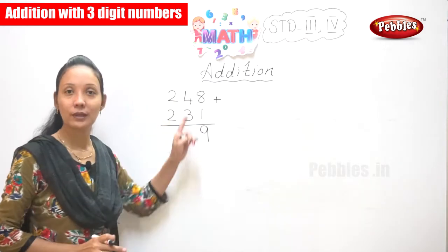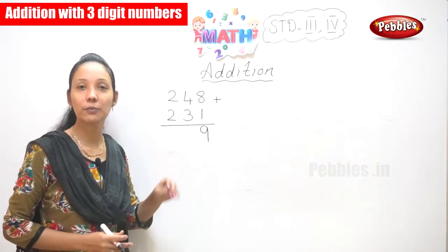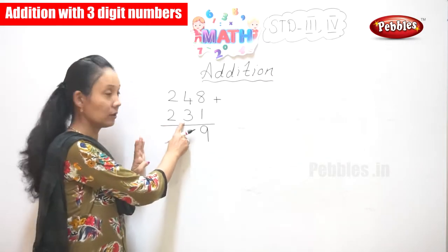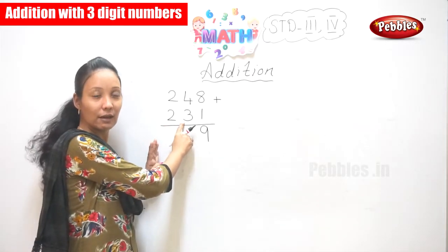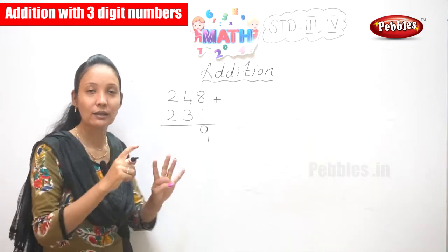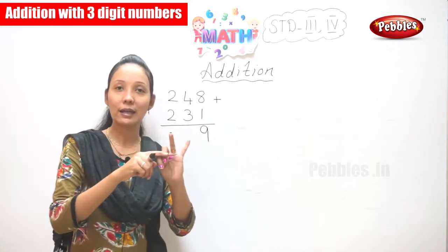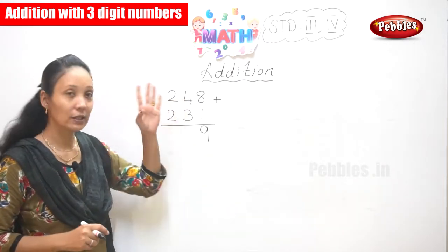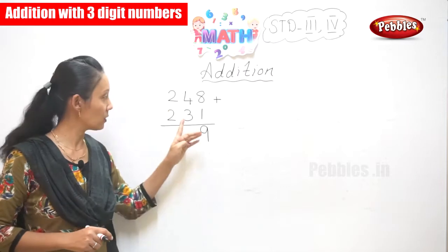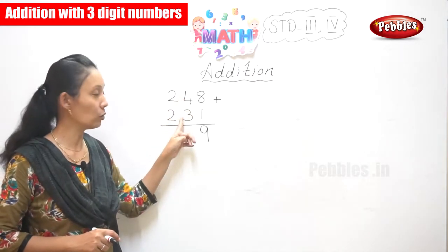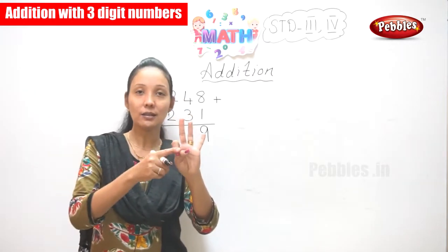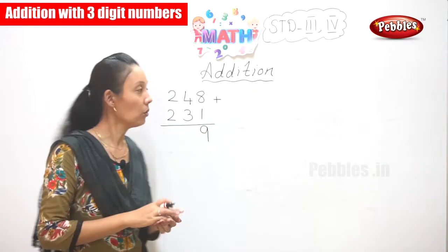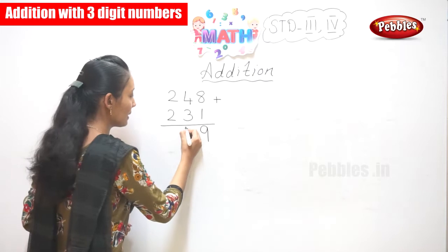Now, 4 plus 3. How much will you get? 4, 5, 6, 7. If not, you take 4 fingers, then count 3 more: 5, 6, 7. So 4 plus 3 is 7.